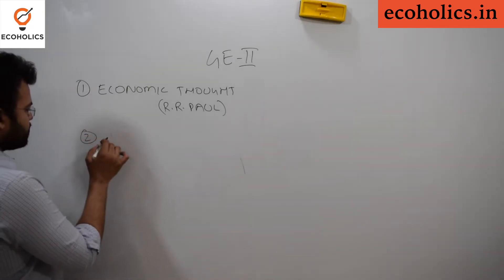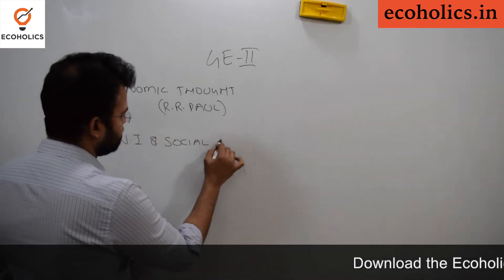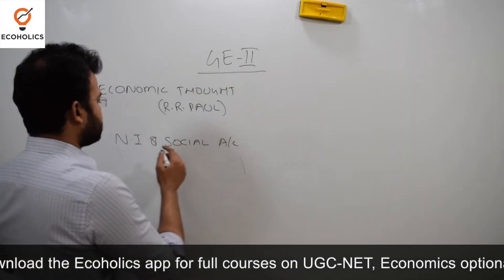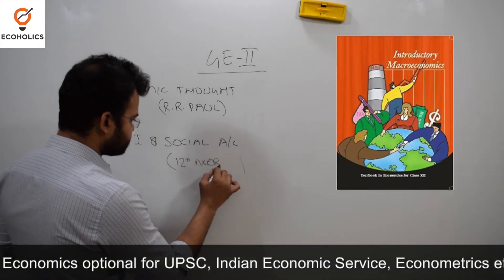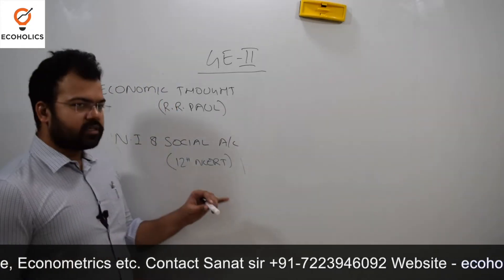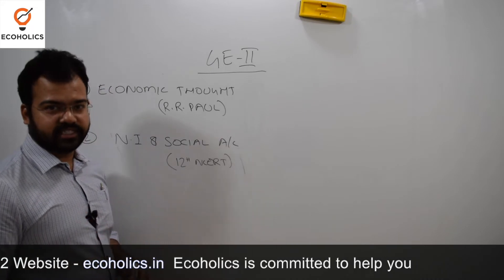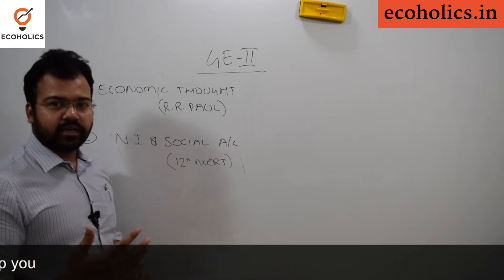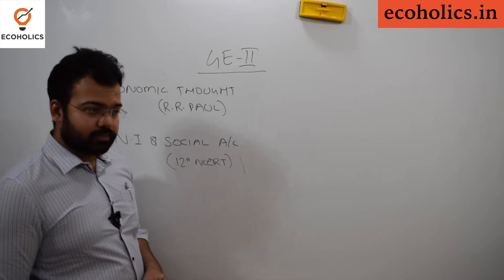The second topic under General Economics Paper 2 is National Income and Social Accounting. For that you can refer to the 12th class NCERT or any macroeconomics book. This topic generally asks about different methodologies to calculate GDP, social accounting, and national income. There are also certain topics like Green GDP and Sustainable GDP that you can correlate with your Economic Growth and Development book.